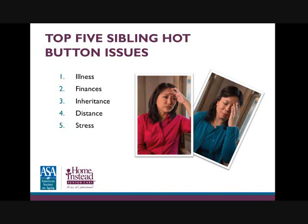The second hot-button issue is money. It's no surprise that money complicates life at any stage, let alone when dealing with an aging or ill parent. Siblings can be forced to make tough caregiving decisions when their loved one's finances factor in. One sibling might be the healthcare power of attorney and the other might be the financial power of attorney, creating potential conflicts if the healthcare POA thinks one type of care is best but the financial POA says mom or dad can't afford that.